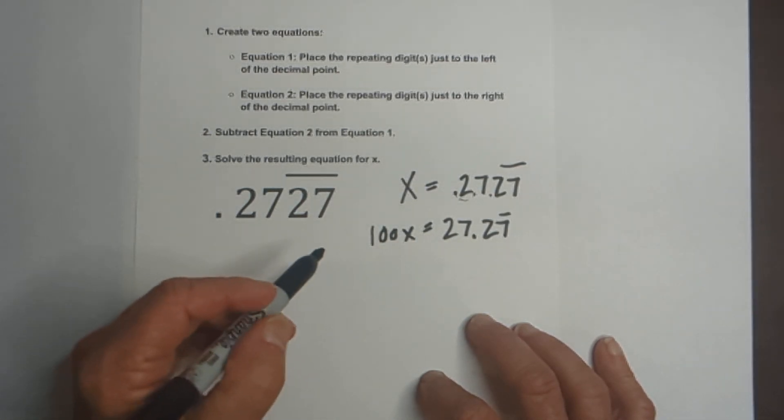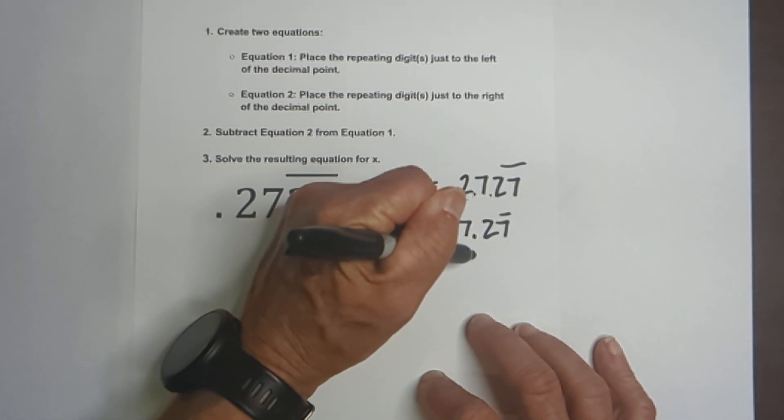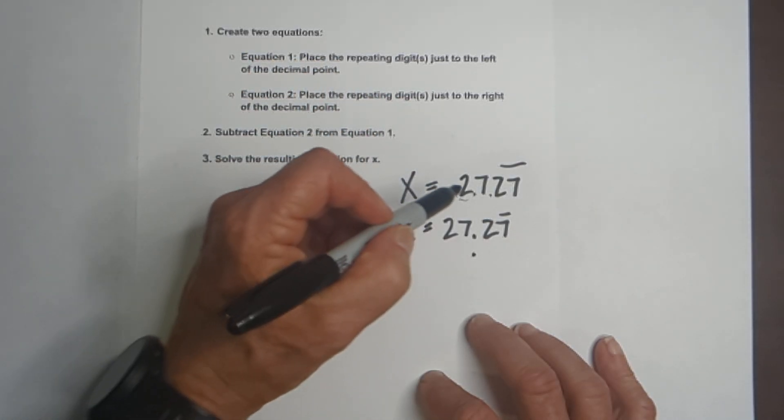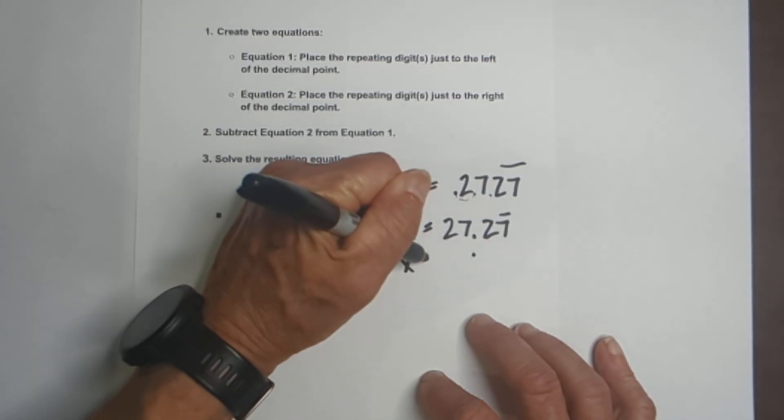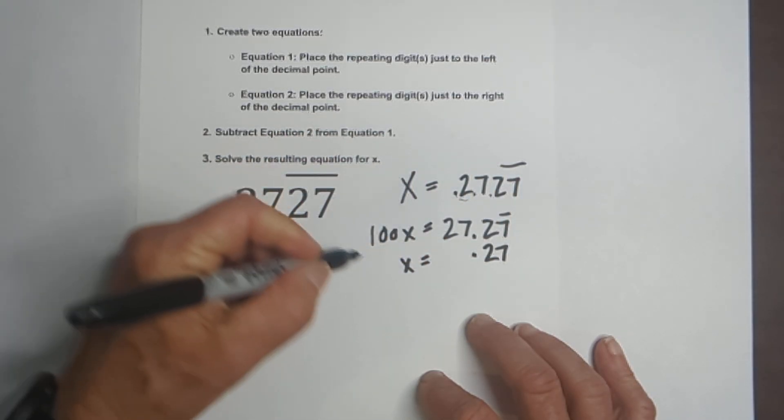the second equation is we want the 2727 repeating just to the right. And so, since we already have x is equal to 0.2727, we will just write this because that places it just to the right.